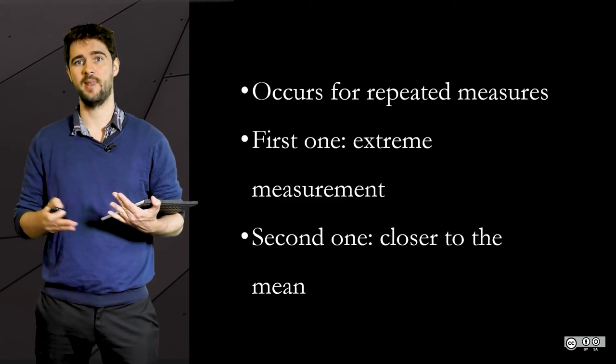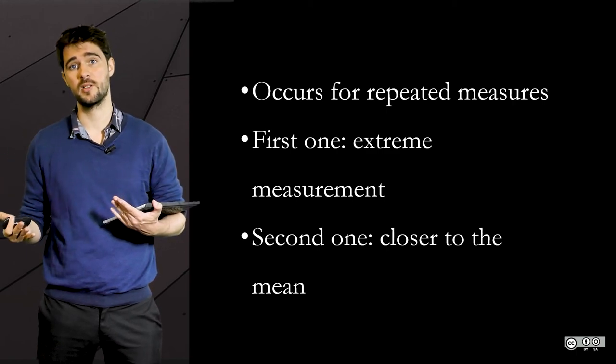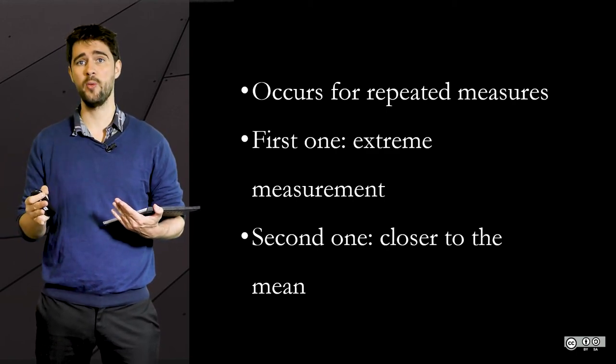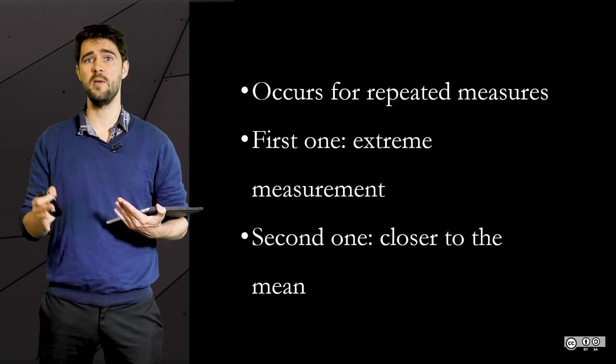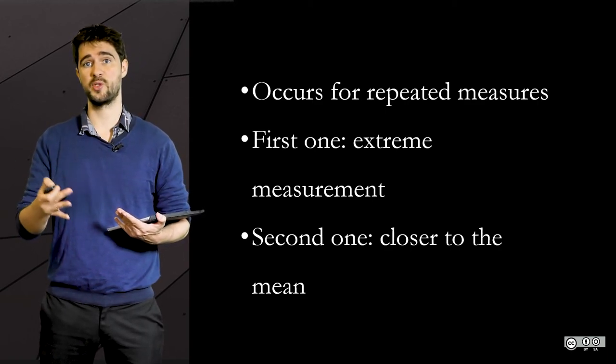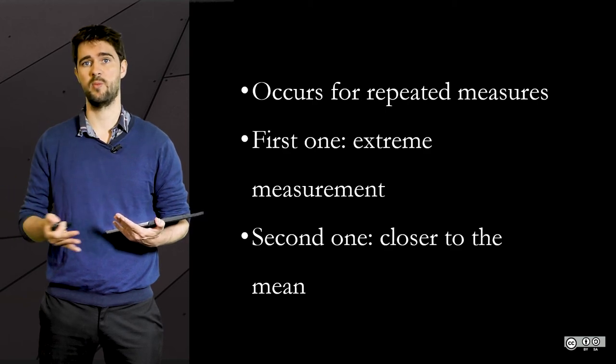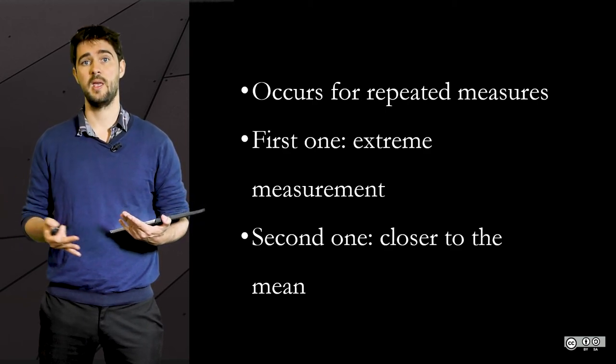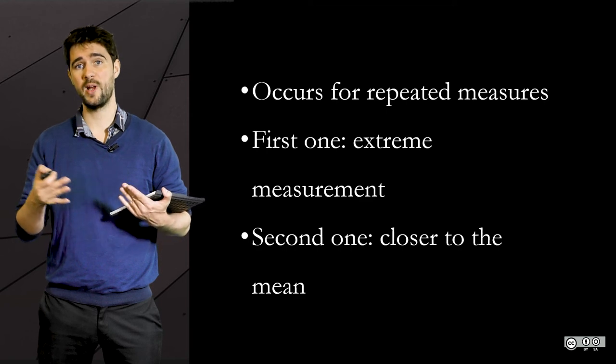Now, it doesn't mean your policies weren't efficient, but probabilities alone explain why, between the year of failure and the following year, the average score moved closer to the mean. That's why it's called regression to the mean.